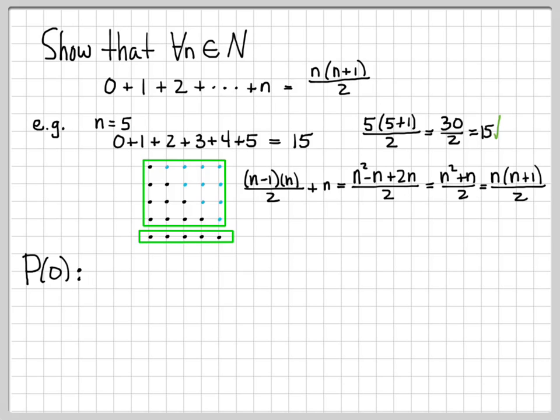So when n equals 0, this turns into something very easy to verify. On the left-hand side, we have to add up all the numbers 0 plus 1 plus 2 all the way up to 0, which means we don't have to add very far at all. We just have 0. And on the right side, it says I need to plug in n equals 0. When I plug in n equals 0, I get 0. So this is very simple to verify that the statement P is true for the case of n equals 0. So that checks out.